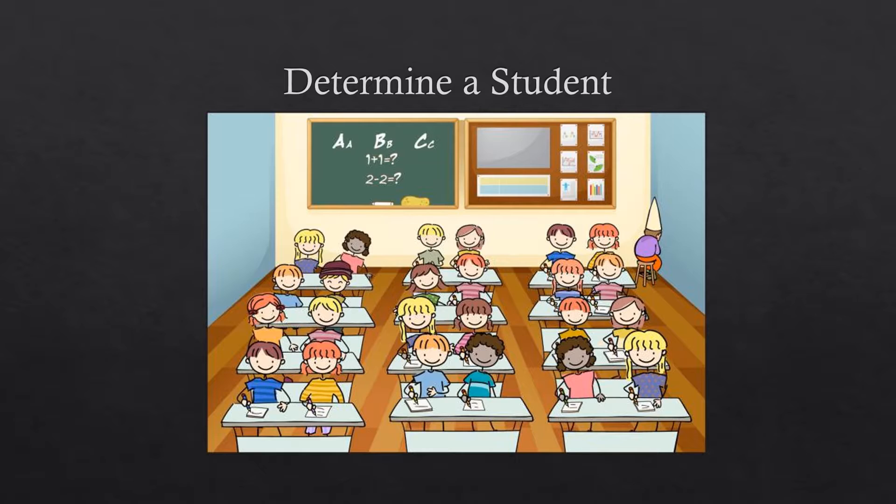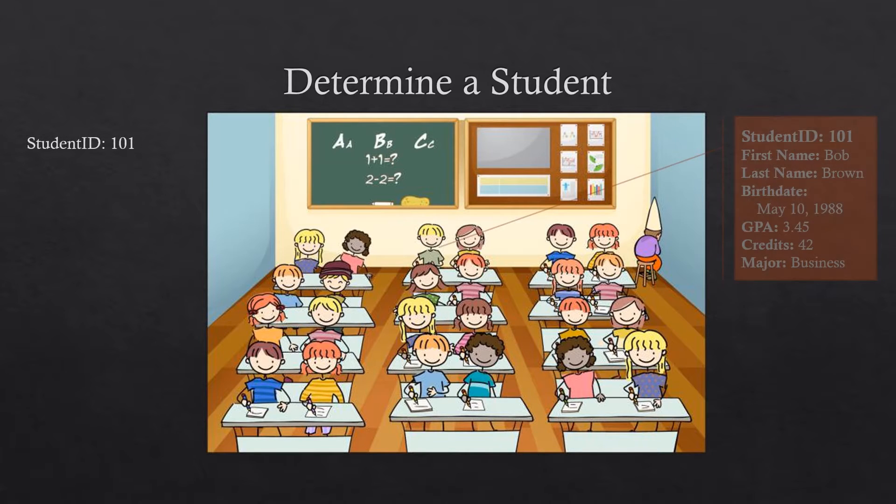So we can say that giving a student ID, we can determine one and only one value for any student's last name, first name, GPA, credits, and major. As you see here, we chose student 101, and we have one and only one value for each one of those. And because it's student ID 101, we get one student.